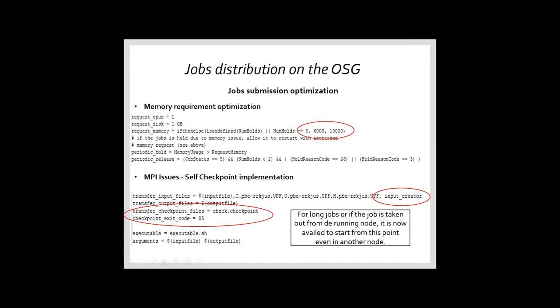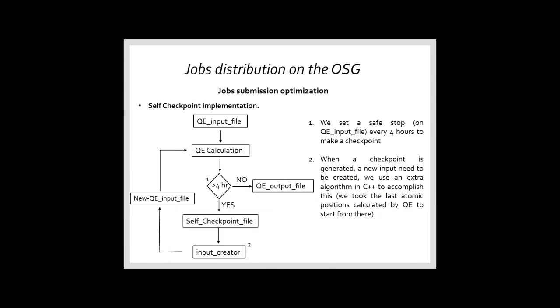And I think that the most important implementation for us is the checkpoint. Because in our case and according to the size of the molecule, the energy calculation will take more time than we expected. At first, we were using MPI to finish our job faster, but we found another series of issues with this. So the OSG staff gave us the checkpoint implementation as a solution. This means that if we have a long job, or if the job is kicked off of the running node, the job is prepared to start from the last checkpoint in the same or in a different node.